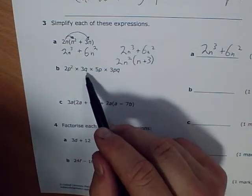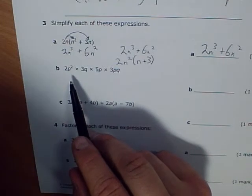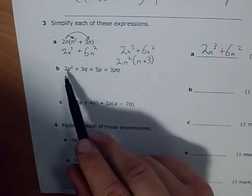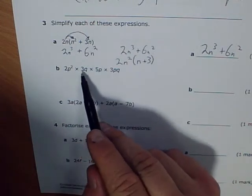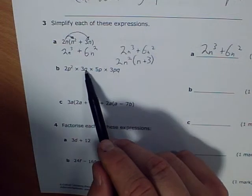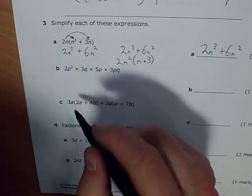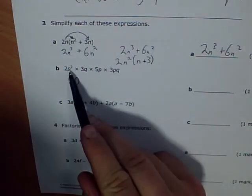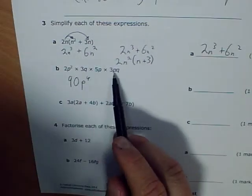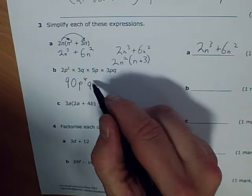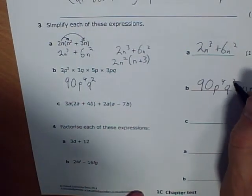Let's have a look at this one. 2p squared times 3q times 5p times 3pq. This is all multiplied together. I'm going to multiply all the coefficients, and then I'm going to multiply everything else together as well. 2 by 3 gives me 6, 6 times 5 gives me 30, 30 times 3 gives me 90. Let's look at the p. I've got p squared, another p, and another p, so I've got p to the power of 4. And how many q have I got? I've got q multiplied by another q, so I've got q squared. That's a very challenging question indeed.